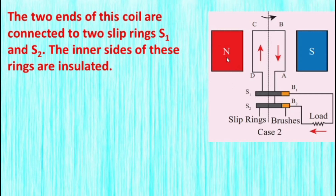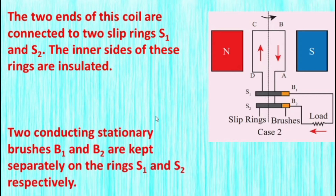In the diagram, N and S are the permanent magnets. ABCD is the rectangular coil, also called the armature. S1 and S2 are the two slip rings, and B1 and B2 are the carbon brushes. The two ends of the coil — ends D and A — are connected to slip rings S1 and S2. The inner sides of these rings are insulators. Two conducting stationary brushes B1 and B2 are kept separately on rings S1 and S2 respectively.